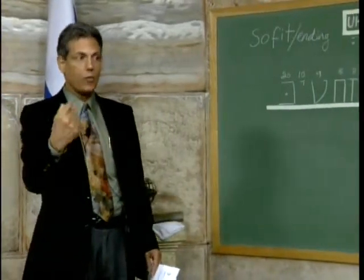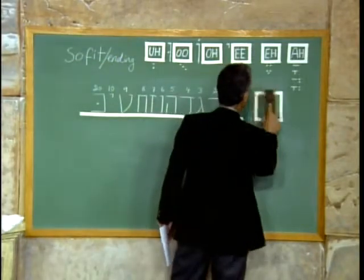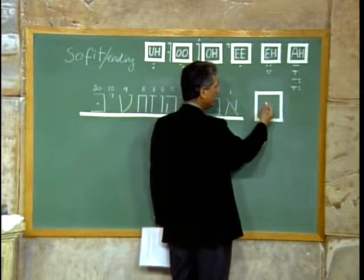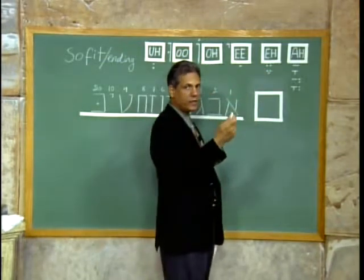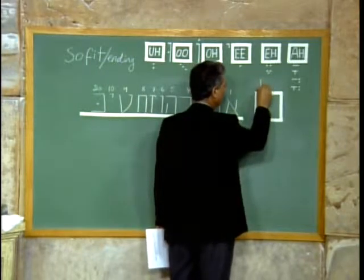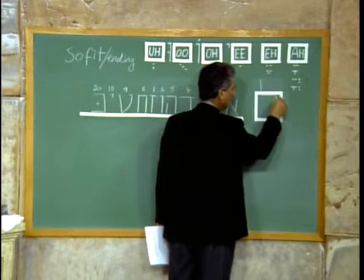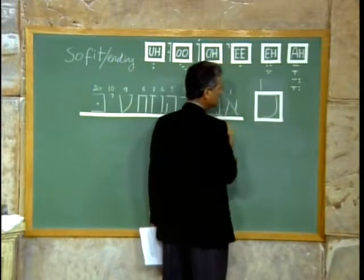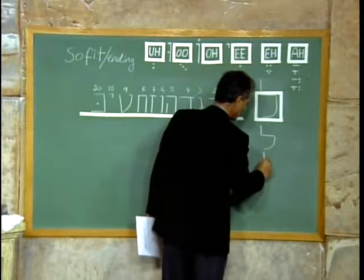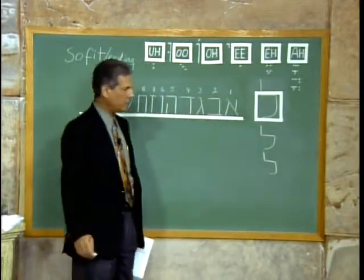Let's take a look at how we write lamed. As we said, the lamed penetrates above the line — that is the only letter that goes above the line. So we start up here, and you can look at it as a vav sitting on a kaf: front to back, coming down like this. So the lamed actually looks like this. That is the lamed, the 'L' sound.